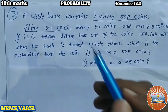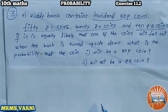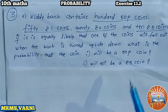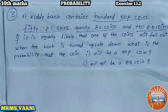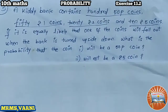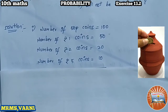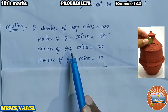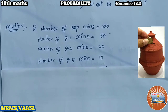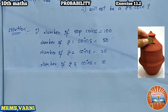So we have 150 paisa coins, 50 one-rupee coins, 20 two-rupee coins, and 10 five-rupee coins. We have to find the probability that when the bank is turned upside down, the coin that falls will be a 50 paisa coin, or will not be a five-rupee coin. Let us go for the solution. Number of 50 paisa coins: 100. Number of one-rupee coins: 50. Number of two-rupee coins: 20. Number of five-rupee coins: 10.